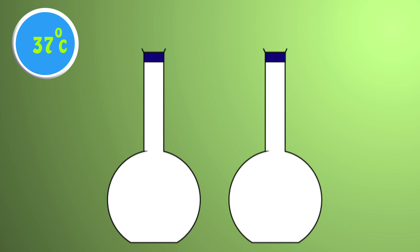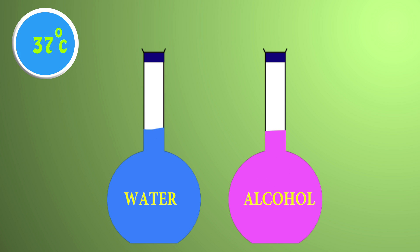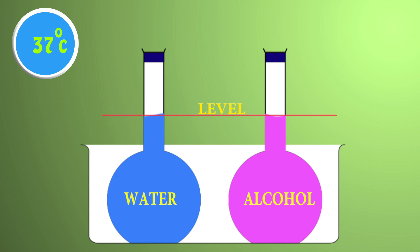Take two identical flasks containing water and alcohol such that their level is the same. Place these two flasks in a large iron trough and pour water in it. Now heat the water till it boils.